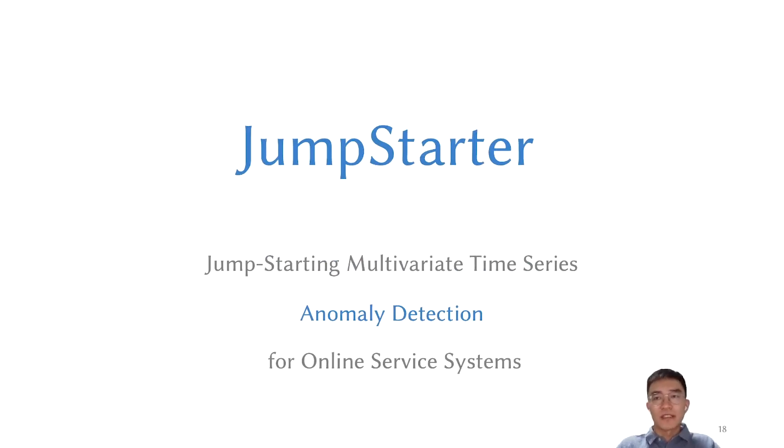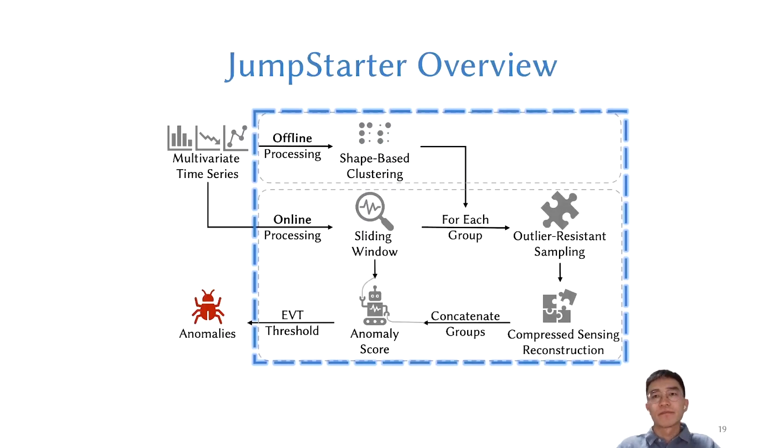To tackle these challenges, we designed JumpStarter, an anomaly detection approach for multivariate time series in online service systems. This is the overview of JumpStarter, which input is the online streaming MTS. JumpStarter consists of both offline and online processing. In the offline, we cluster MTS based on one day of data. After a software change, it does not need to restart the offline processing again. In the online processing, we use a sliding window to do anomaly detection based on compressed sensing. Next, I will explain each component in detail. In particular, shape-based clustering and outlier-resistant sampling algorithm.